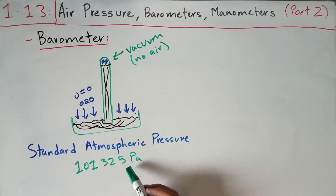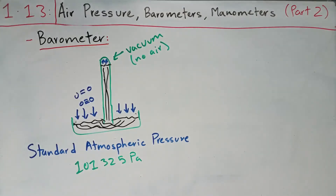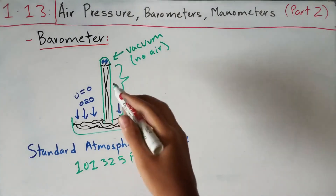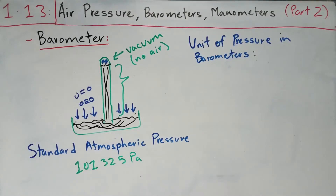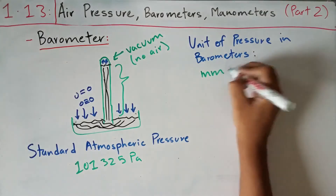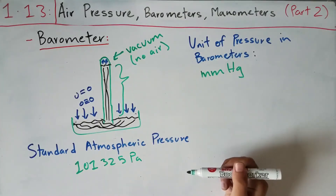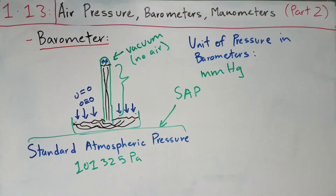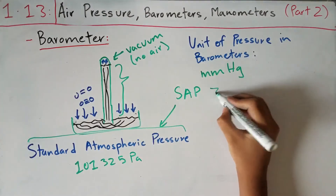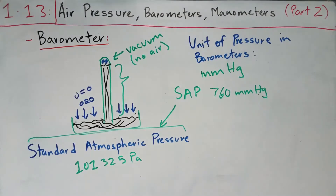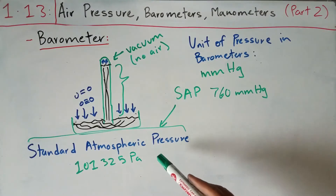At sea level, the standard atmospheric pressure is about 101,325 pascals. To find the pressure using a barometer, we use the height to which the mercury is displaced in the tube — this height is itself a measure of pressure. The unit of pressure in barometers is therefore millimeters of mercury (mmHg). The height equivalent to standard atmospheric pressure is 760 millimeters of mercury.